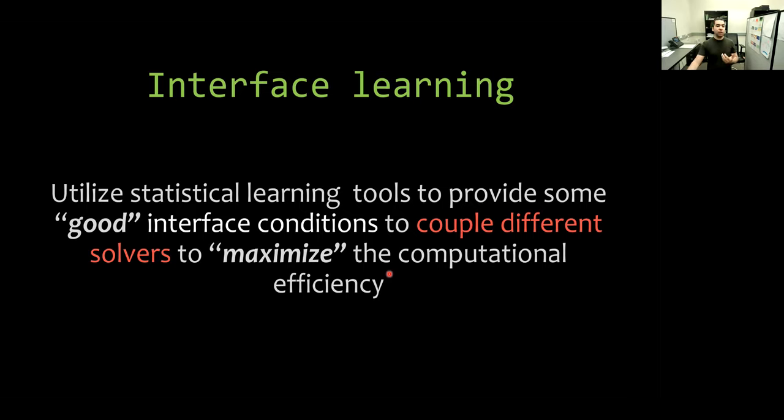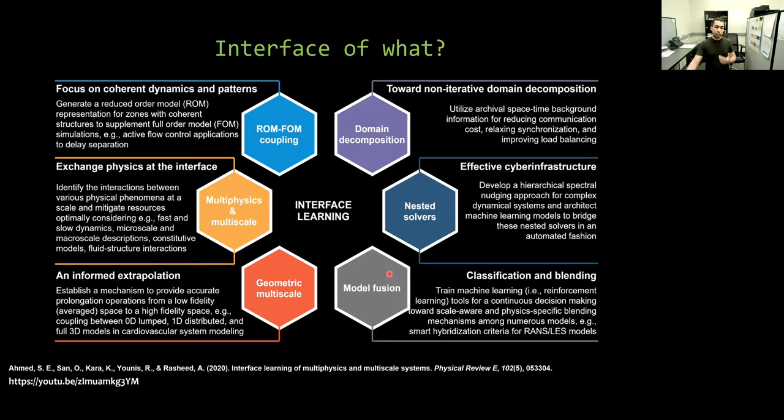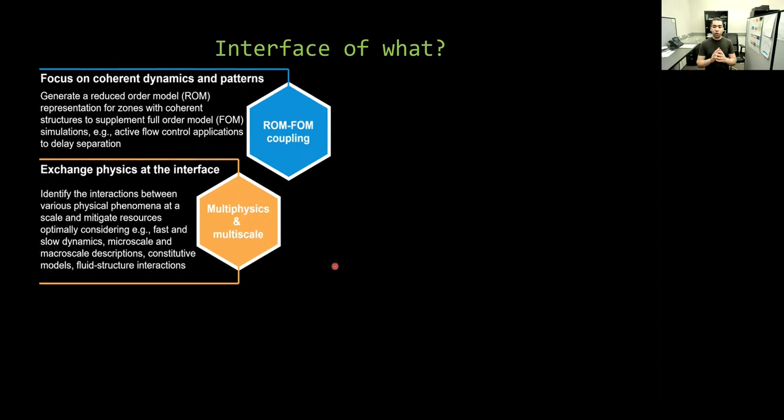In principle, interface learning refers to using or utilizing statistical learning tools or machine learning tools to provide good or consistent interface conditions to couple different solvers or different scales or descriptions to maximize the computational efficiency of the whole framework. In this figure, we sketch different directions or areas where we believe interface learning can be really useful. Currently, we are working on many of these blocks. But for the sake of time, I will just focus on two of them.